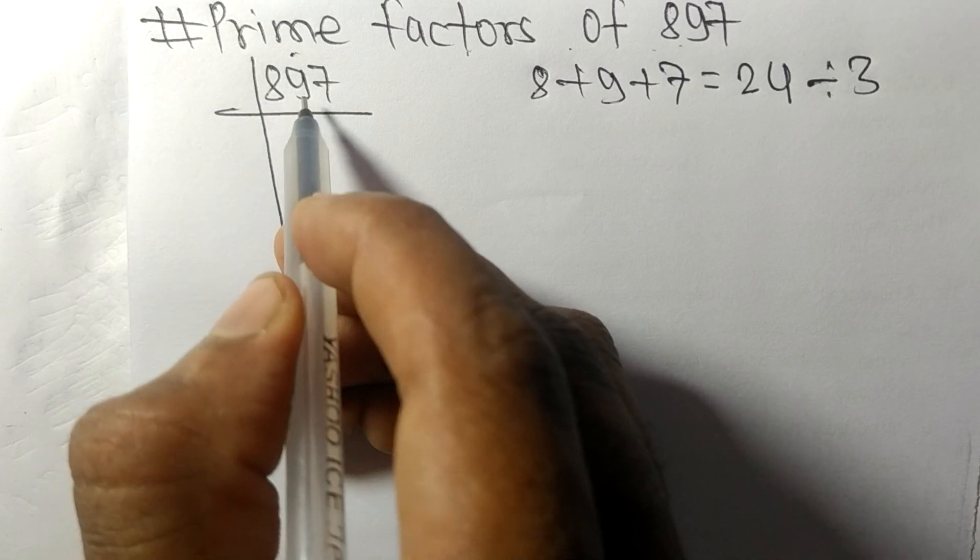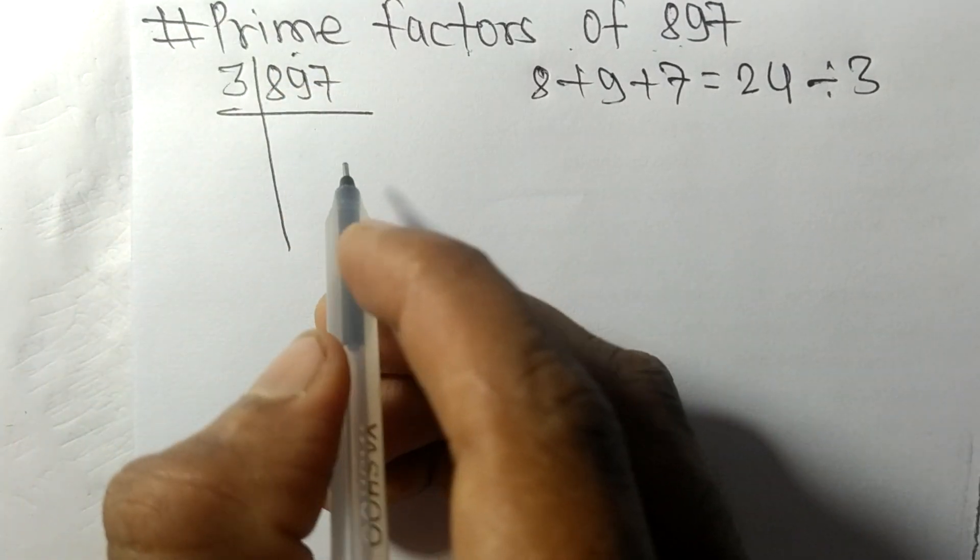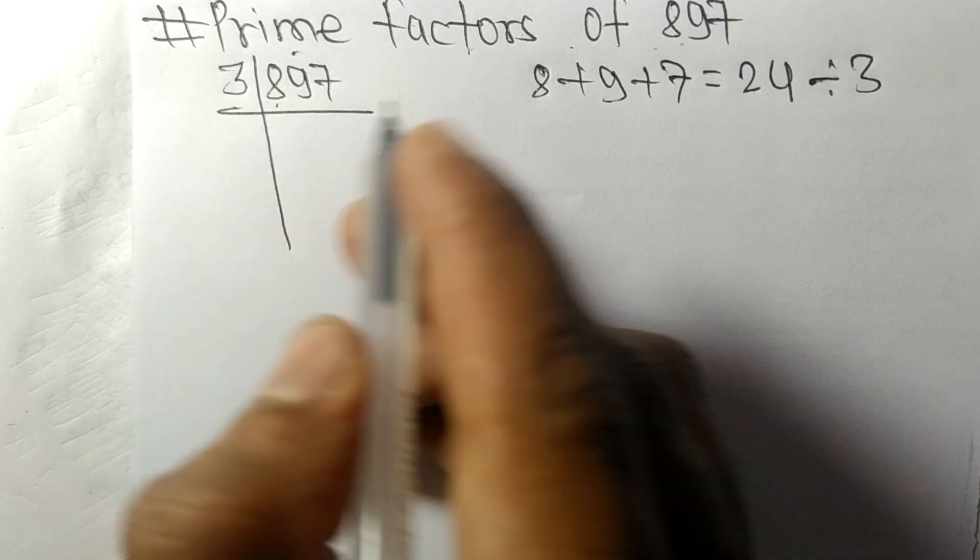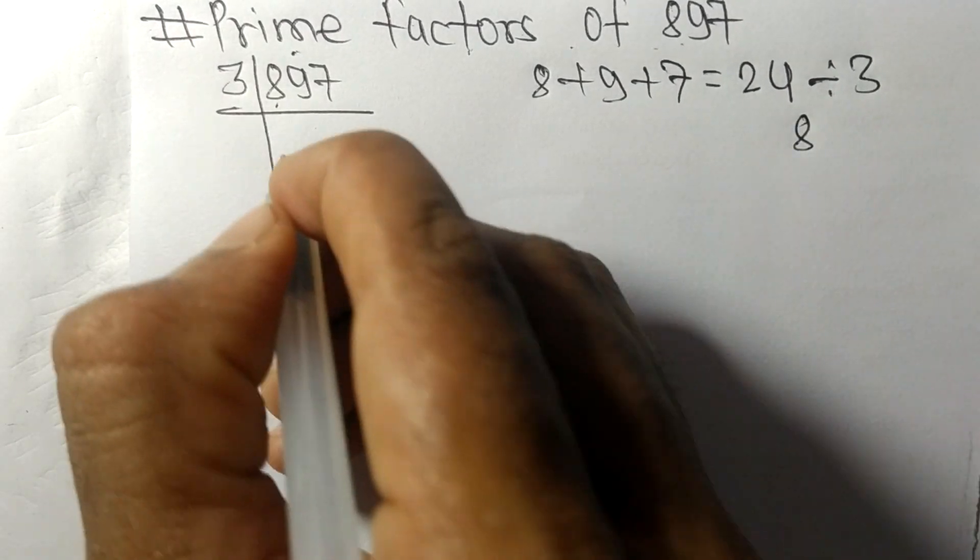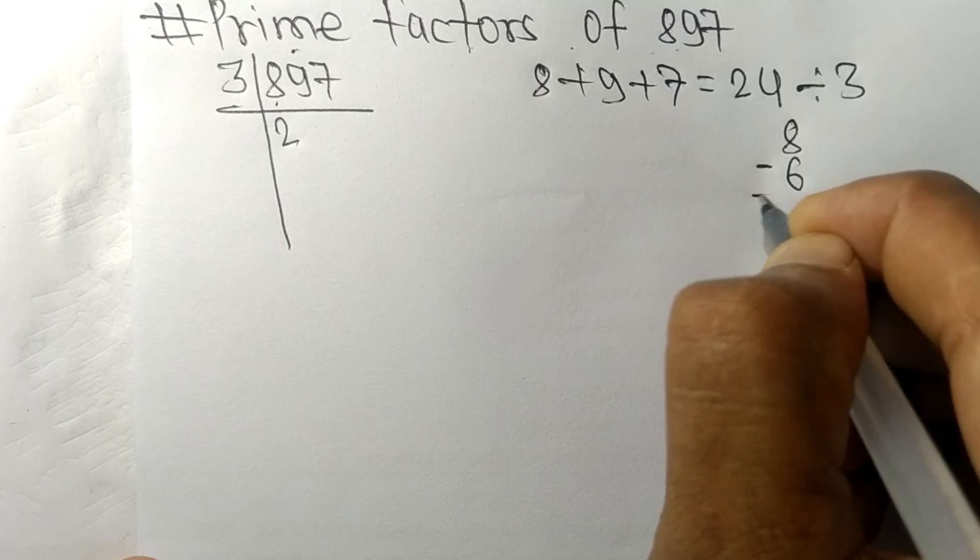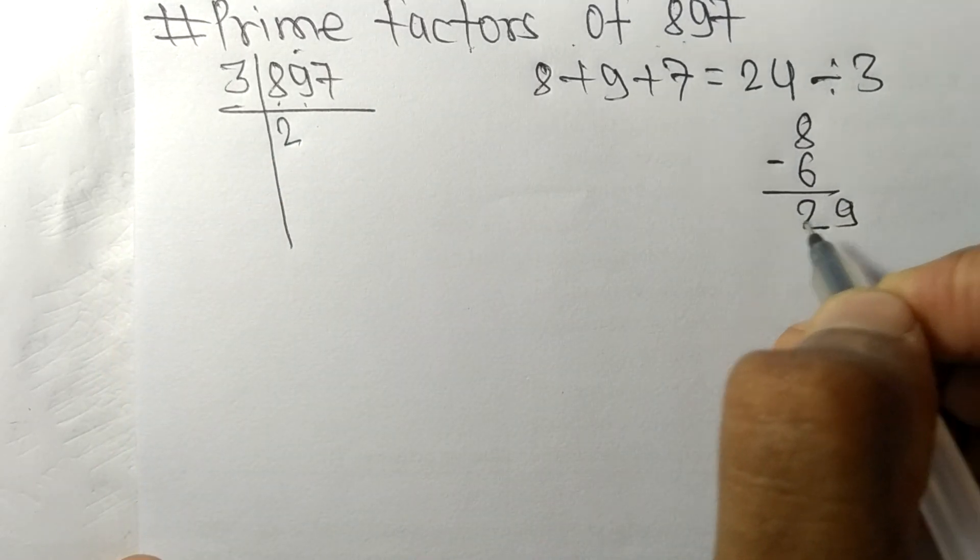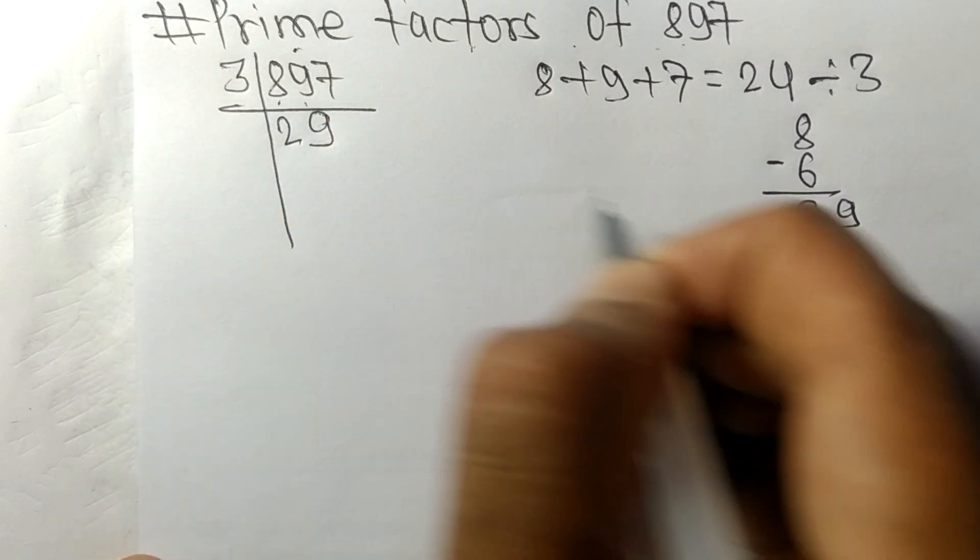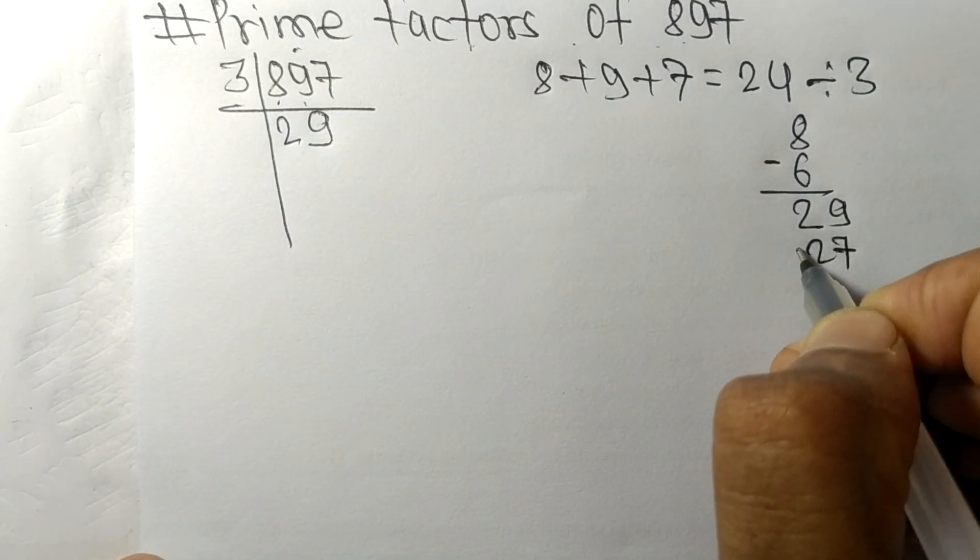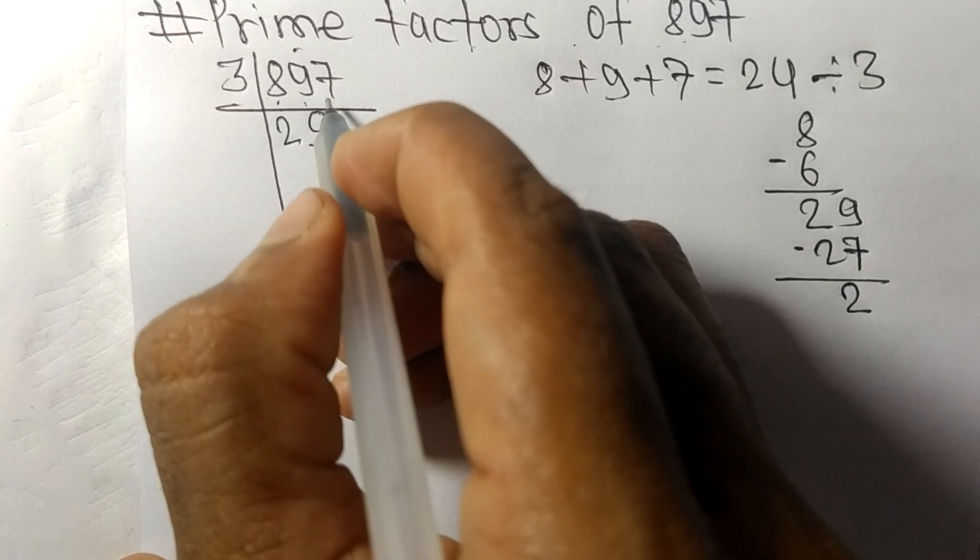So 897 is also divisible by 3. First we have 8, so 3 times 2 means 6, on subtracting we get 2 and this 9, making 29. So 3 times 9 means 27, on subtracting we get 2 and this 7, making 27. 3 times 9 means 27.